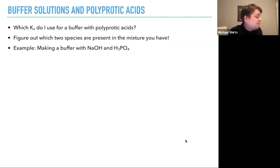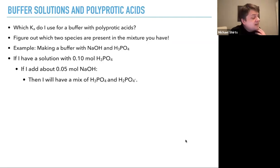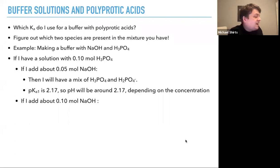So let's say we're making a buffer with sodium hydroxide and phosphoric acid. And so if I have a solution that's 0.1 molar of phosphoric acid, if I add about 0.05 moles of sodium hydroxide, then I'll have a mix of phosphoric acid and H2PO4. So the pKa1 is about 2.7. So the pH will be around 2.7, you know, depending on the relative concentrations, if you didn't add exactly 0.05 sodium hydroxide.